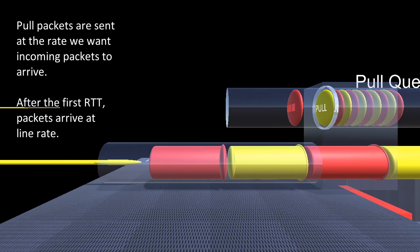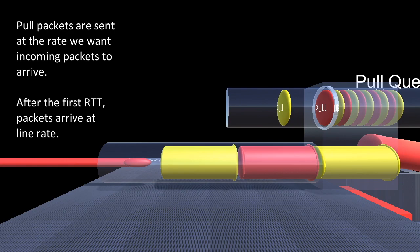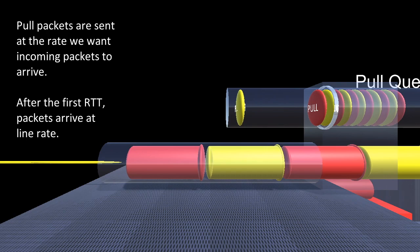So after the first round trip time, traffic arrives at line rate. The receiver wants, you can also prioritize traffic from one sender over others, even during an incast. See, one packet goes out, one pull goes out, one packet comes back. Pull goes out, packet comes back.